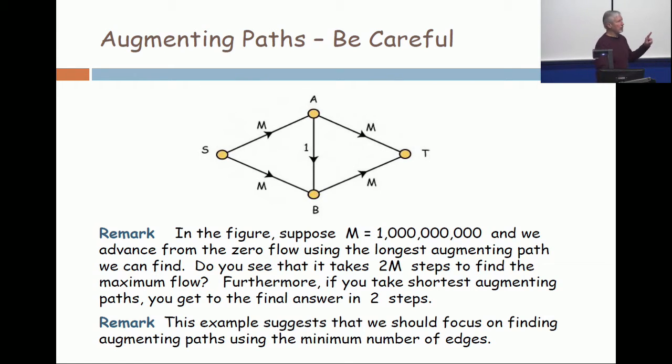Now you go from B to T. The flow is zero, the spare capacity is M. So what's the tightest constraint? The tightest constraint is the one. So you increase the flow by one on all three of those edges. Now you should see one unit going like this, like this, and like that. Are you with me?